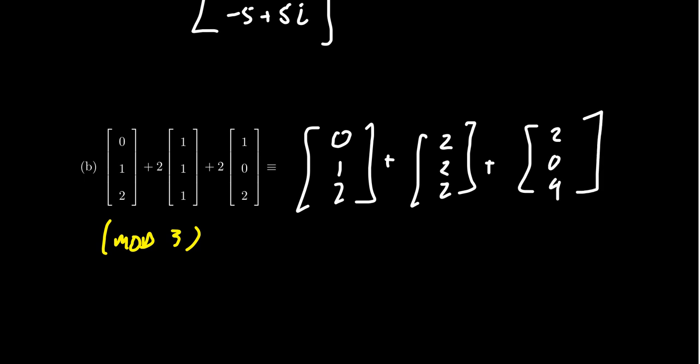Now as we're working mod 3, there is no such number as 4 exactly. It should be reduced down to be 1. And so remember, when you work mod 3, 2 times 2 is actually equal to 1 because 4 and 1 are congruent mod 3.